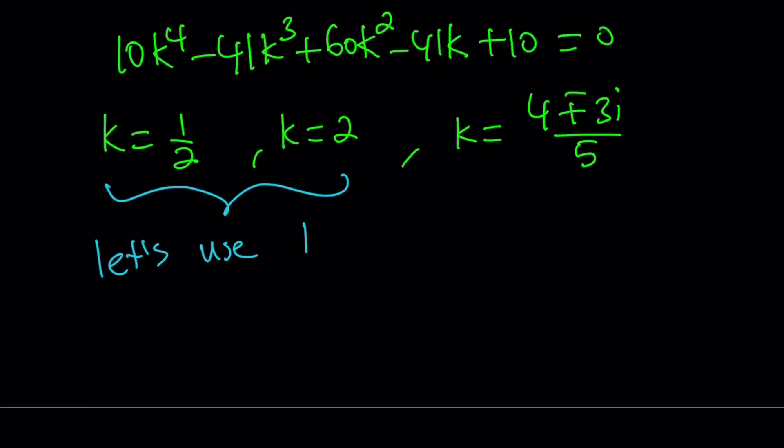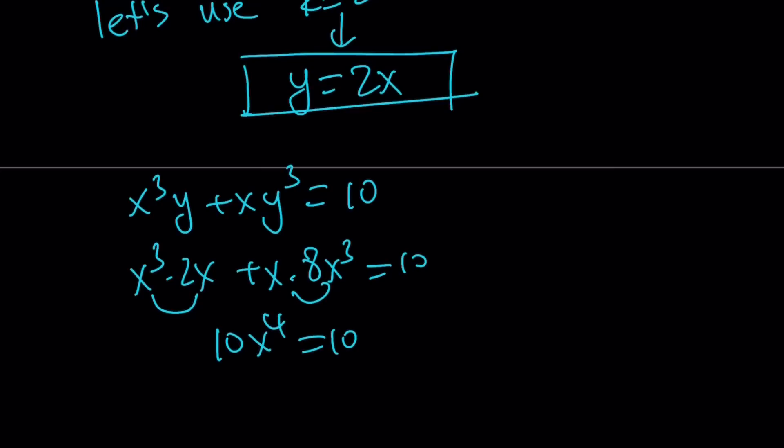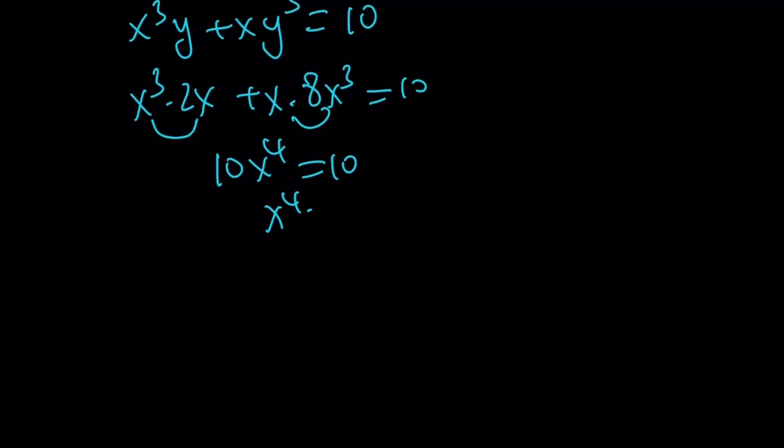Let's use k equals 2. That means y equals 2x. And now, this is a good thing to use because we can just plug it in. What is my first equation? x cubed y plus xy cubed equals 10. That looks a little simpler. Replace y with 2x. And then you're going to get 8x cubed here. And this gives us 2x to the fourth plus 8x to the fourth, which is 10x to the fourth equals 10. Which means x to the fourth equals 1, if you divide both sides by 10.